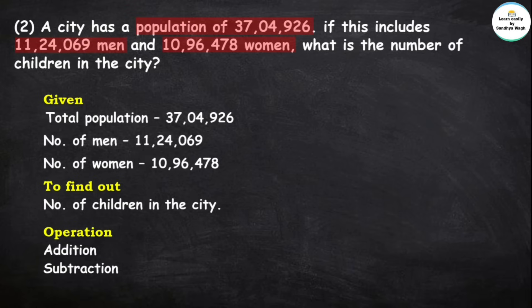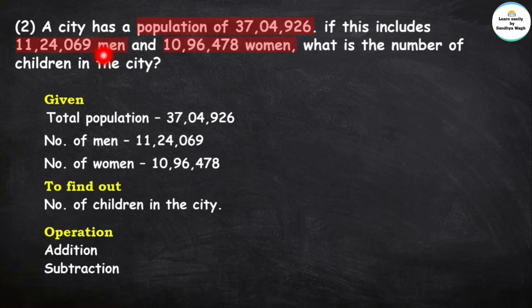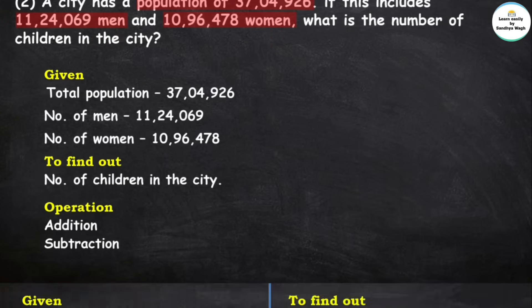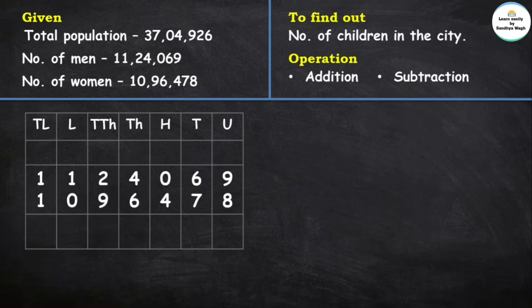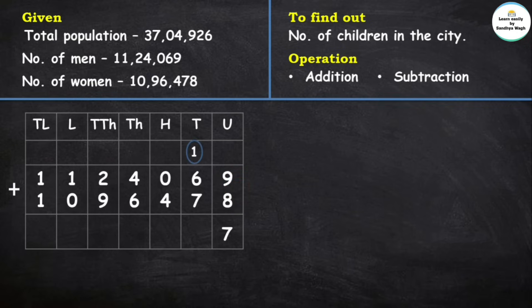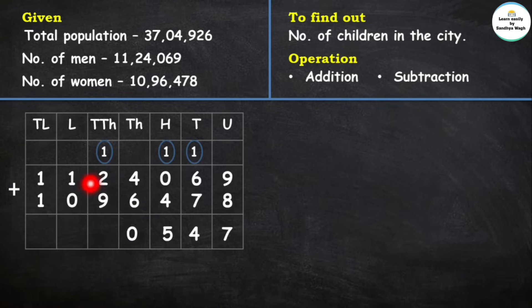We will first do addition of men and women, then subtraction. Let's add: 11,24,069 plus 10,96,478. 9 plus 8 is 17, carry 1. 6 plus 7 is 13, plus 1 is 14, carry 1. 4 plus 1 is 5. 4 plus 6 is 10, carry 1. 2 plus 9 is 11, plus 1 is 12, carry 1. 1 plus 1 plus 1 is 3. 1 plus 1 is 2.